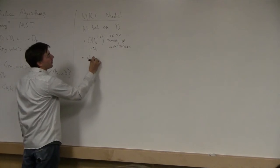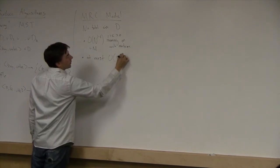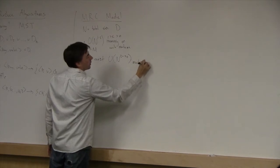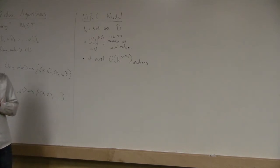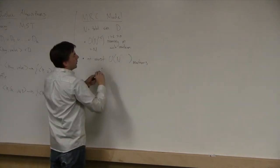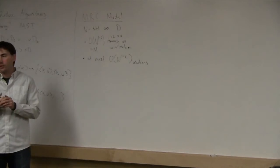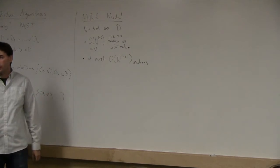You have at most N to the 2 minus 2 epsilon machines, so basically you can't have billions of machines — maybe on the order of thousands. You don't have one machine for each data element. The shuffle step is going to be at most N to the 2 minus 2 epsilon, meaning the total output of every map step is at most this value — essentially you can send the memory of every machine to every other machine.